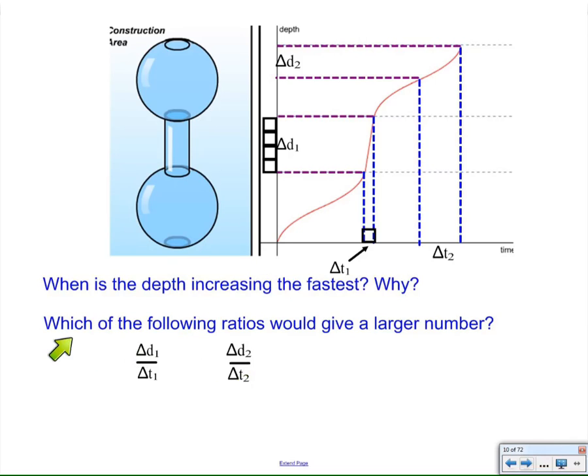The question is, which one of these ratios would give a larger number? If you were thinking that change in d₁ over change in t₁ is going to be the larger number, you are correct. And we can see it here because we have more depth over less time.